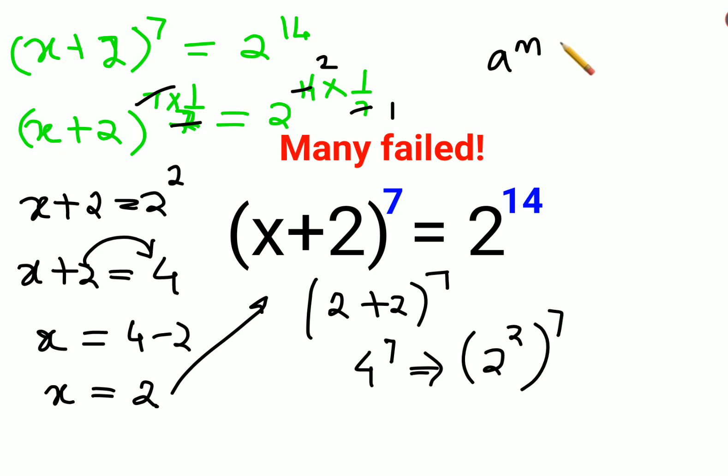In indices, (a^m)^n can be written as a^(m×n), which gives us 2^(2×7) = 2^14, which is our RHS. Therefore, the value of x in this question is 2.